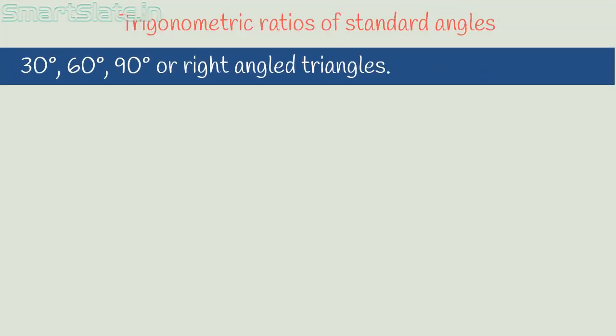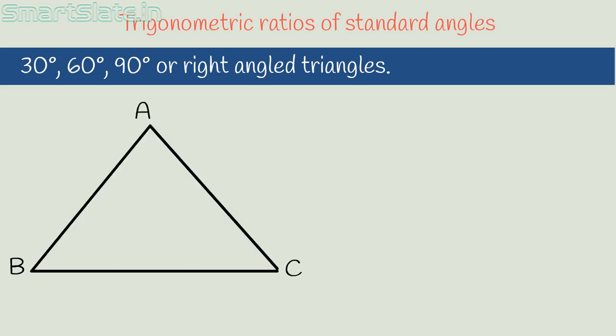Next, we will find the trigonometric ratios of 30° and 60°. Even though we use trigonometric ratios with respect to a right-angled triangle, it is possible to apply concepts of trigonometry to any other type of triangle by drawing a perpendicular line. Consider equilateral triangle ABC where all angles are equal to 60° and all sides — AB, BC, and CA — are equal.